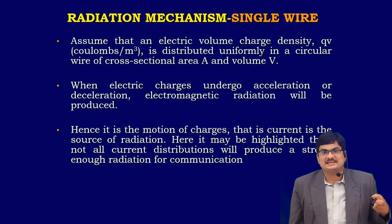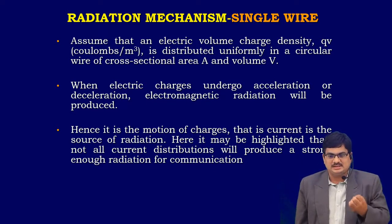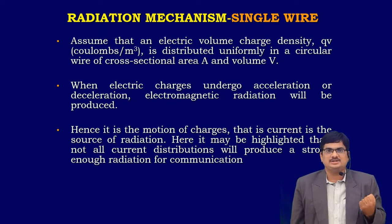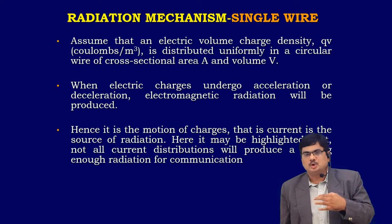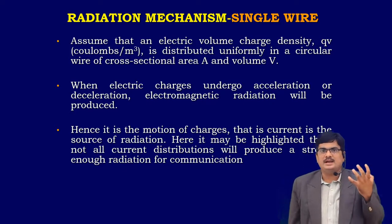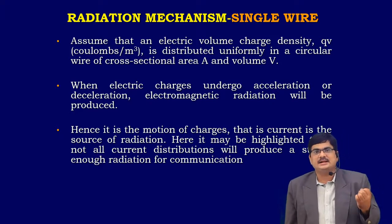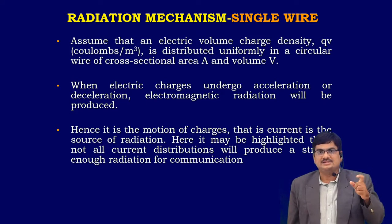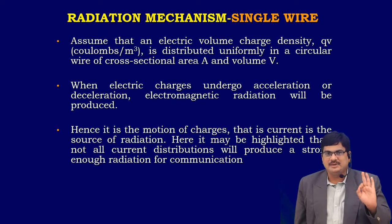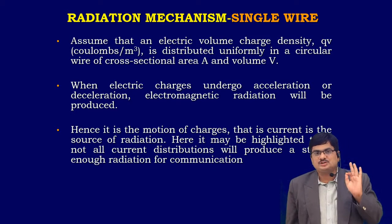When we give some supply or excitation, the electric charges undergo acceleration and deceleration. That means when we give some current, charges are moving here and there — time-varying current elements. Accelerated and decelerated charges are the sources of radiation. Time-varying current elements and accelerated or decelerated charges are the sources of radiation.